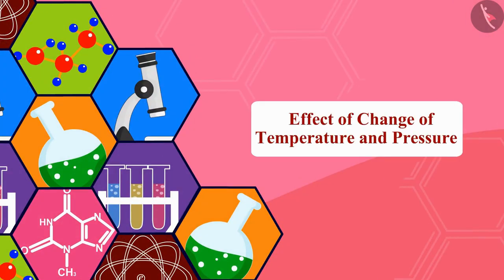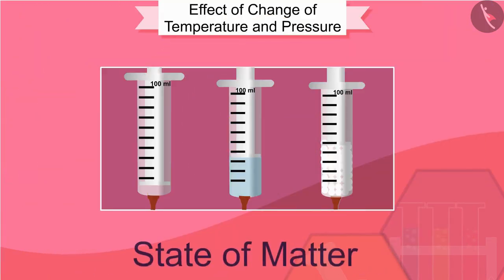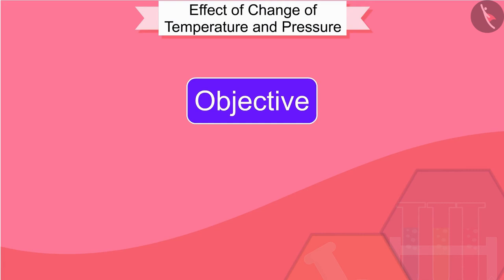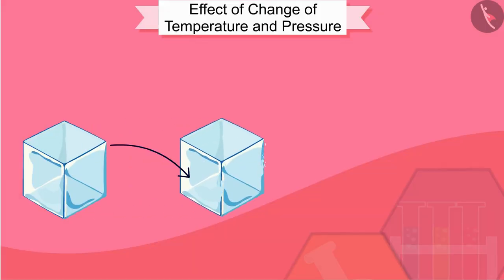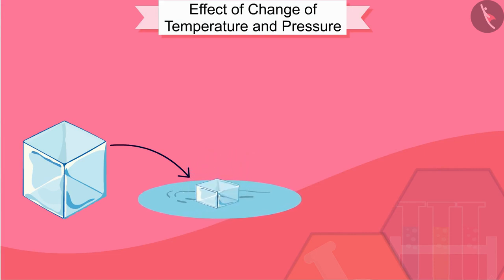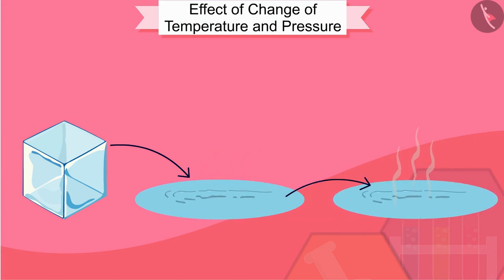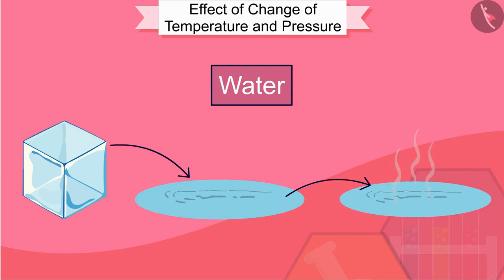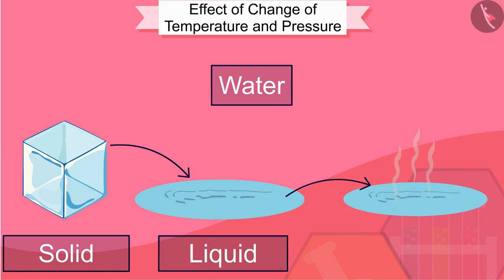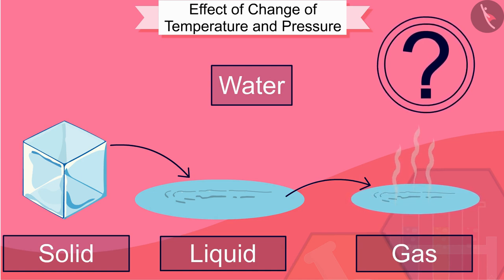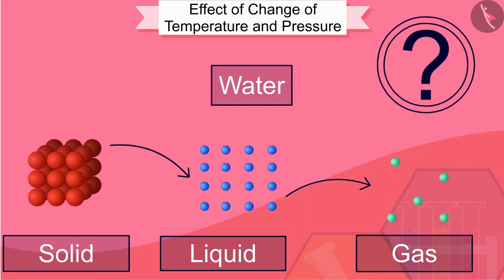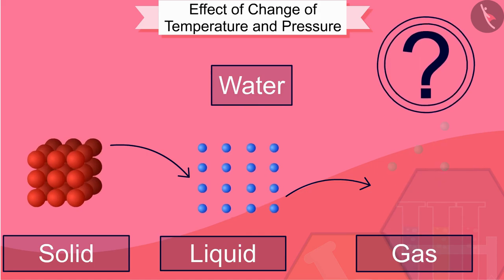Welcome to this video. In the previous video we studied the state of matter. Let us now study the effect of temperature and pressure changes. Friends, you must have seen ice melting in water and water changing into water vapor on heating. From these observations we can say that water can exist in three states of matter: solid, liquid, and gas. But have you ever thought about what happens inside matter when the state changes? What effect does the change of state have on the particles of matter? Let us try to find the answers to these questions in this video.